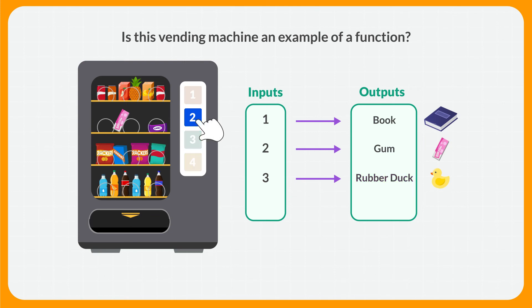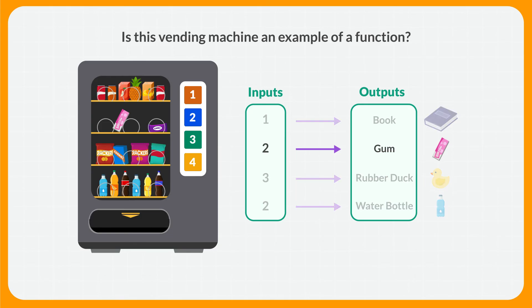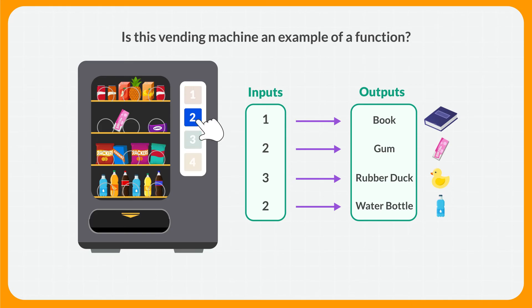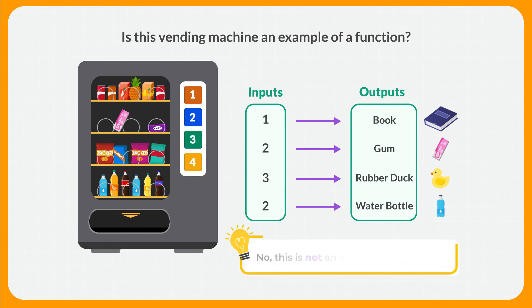Then someone else comes up and presses the second button again, but they get a water bottle. How many outputs does button 2 have? Pressing button 2 first gave the output of gum, and then gave another output — a water bottle. So the input has two outputs. Is the vending machine an example of a function? The input, button 2, does not have exactly one output — it has at least two. We can't be sure what is going to come out of the machine when we press the second button. So this vending machine is not an example of a function.